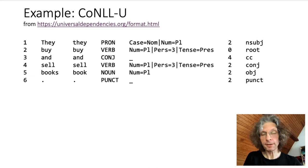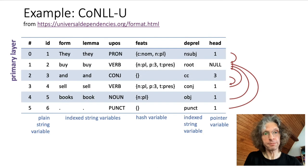This format translates directly into a single primary layer with seven variables. Tags and lexical features are stored as indexed string variables as in CWB3. For token IDs we use plain strings, and for the morphological features we have hash variables. The dependency graph is represented by a pointer variable that simply holds the position number of the head token.